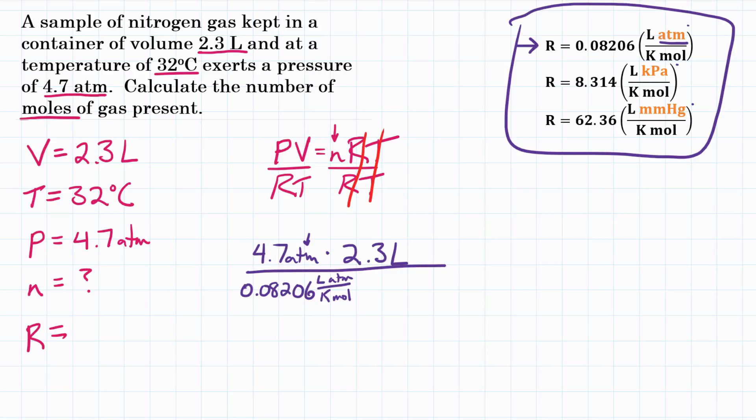And if we do it right, all of our units should cancel out in the end except for the one we want. Now our last variable we have to fill in. We can't use Celsius. So we have to add 273 to convert our Celsius to Kelvin. It has to be in Kelvin. So that's going to be 305 Kelvin. That's what we will put down here for T.